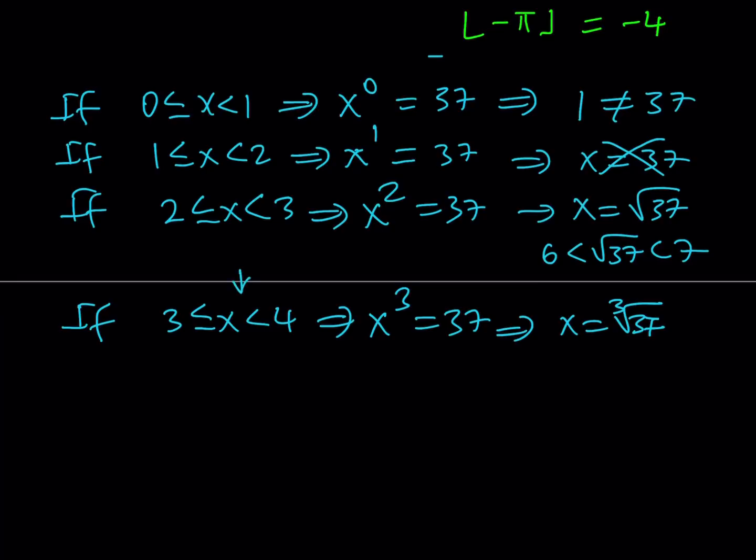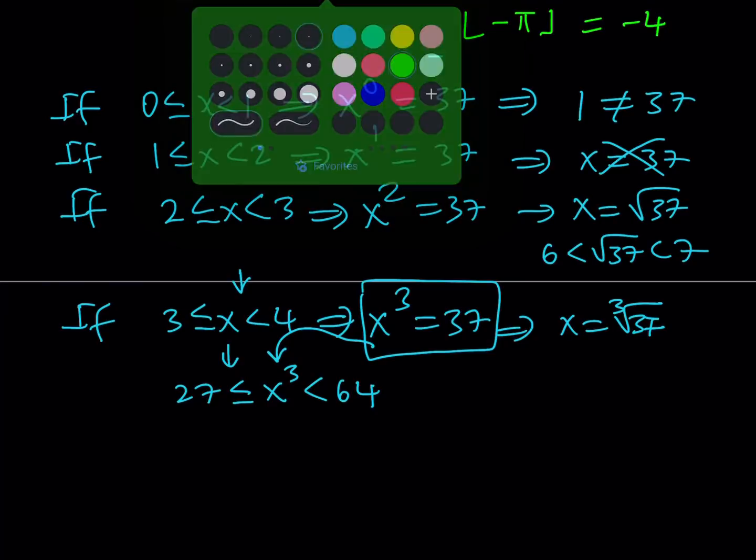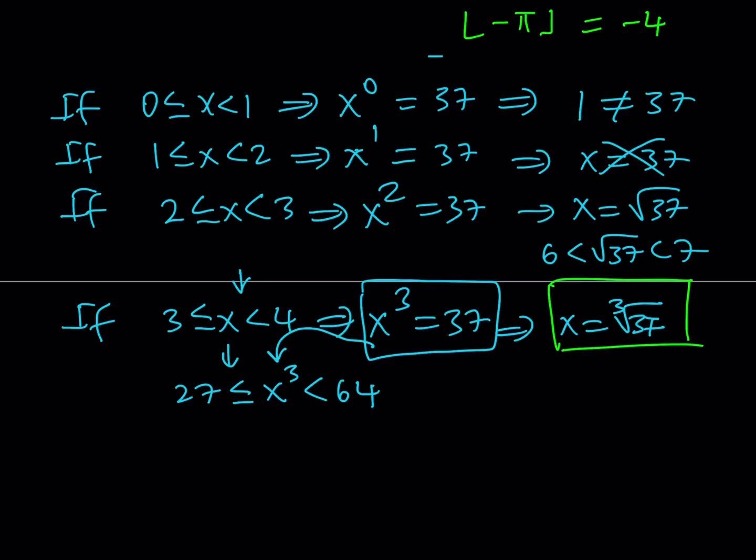Because we made an assumption saying that, okay, let x be in this interval, and then is that going to work? Now, you can easily check this because we know that x cubed is equal to 37. Let's go ahead and cube everything here. We're going to be getting x cubed between 27 and 64, which means that our solution is valid because we got 37 from x cubed.